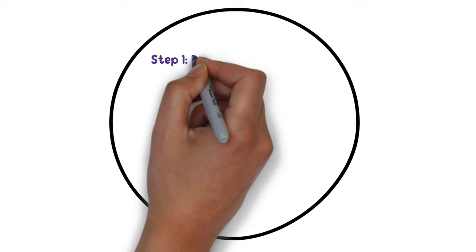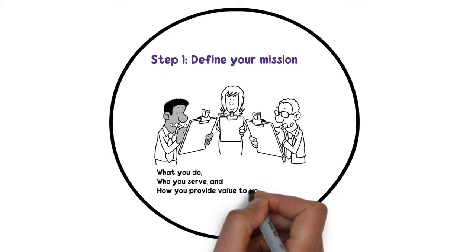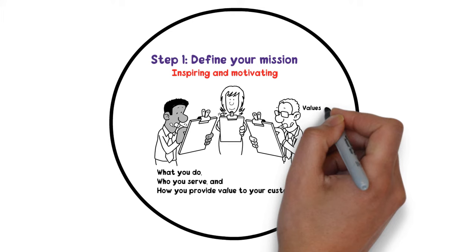Step 1: Define your mission. Your mission statement is a brief, clear statement that outlines the purpose of your business. It should describe what you do, who you serve, and how you provide value to your customers. Your mission statement should be inspiring and motivating, and it should reflect the values and goals of your business.